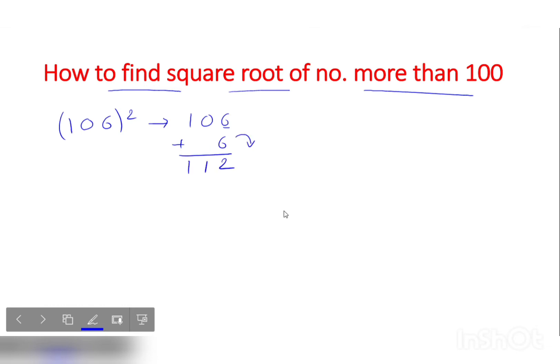And what do we do here? How much is the square of 6? 36. So the square of 106 is 11236.